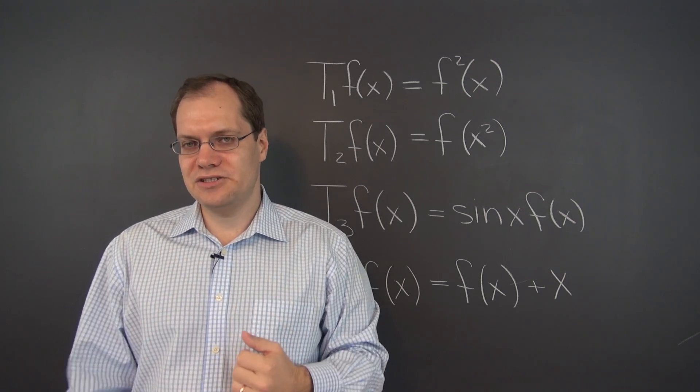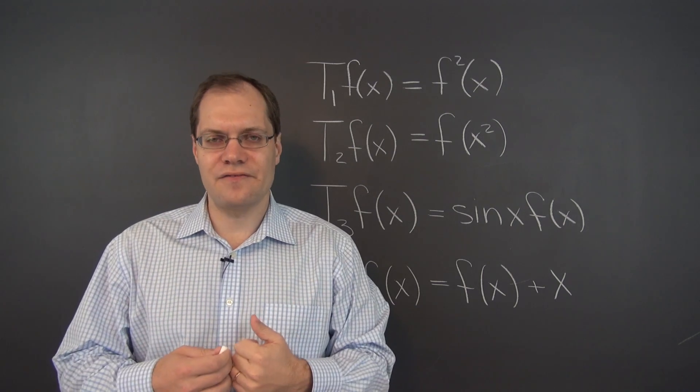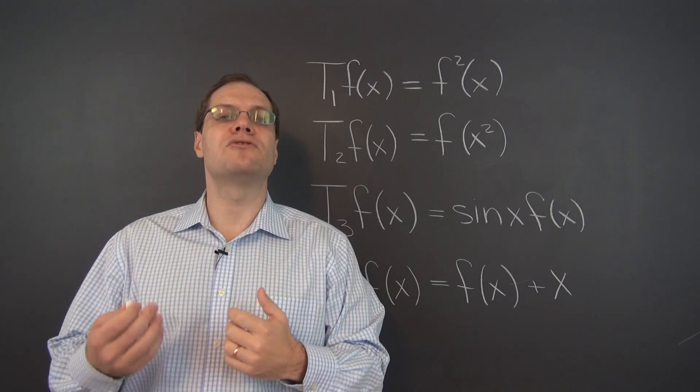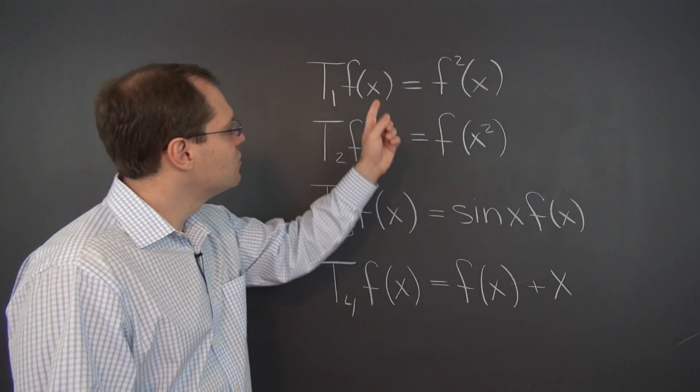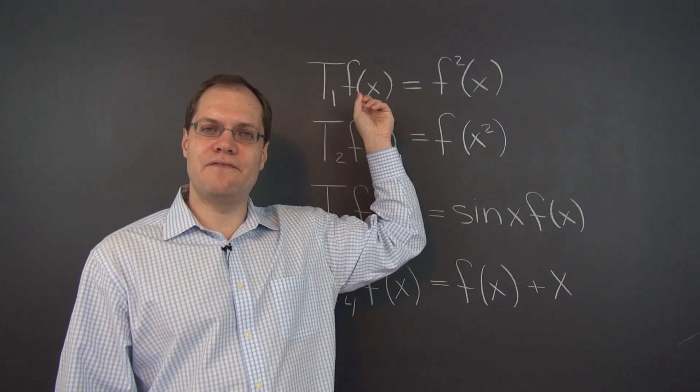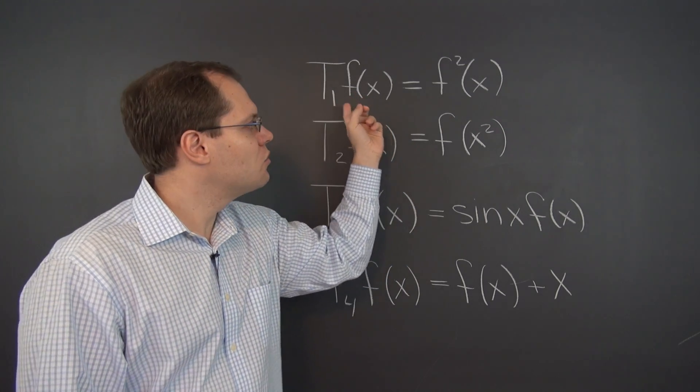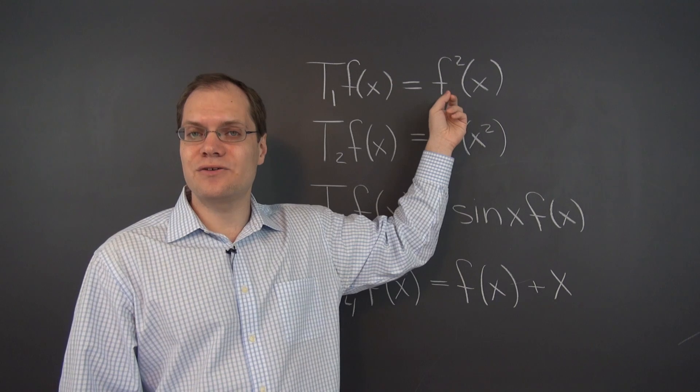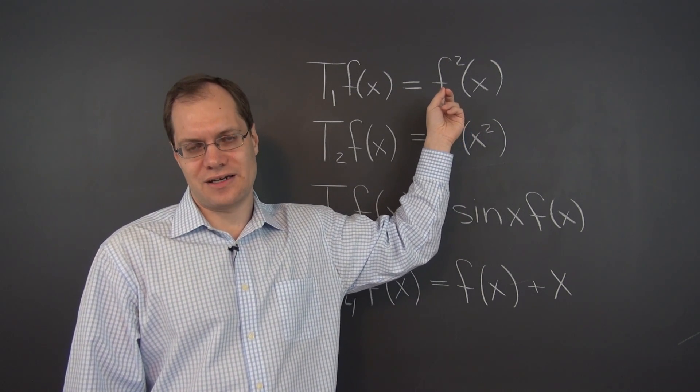Let's just try the multiplication test. What would happen if we multiplied a function by 5 and then transformed it versus transforming the function first and then multiplying it by 5? Well, if we multiply the function by 5 first, in other words plug in 5f of x, what will come out is that thing squared or 25f squared of x.